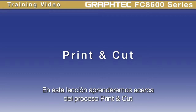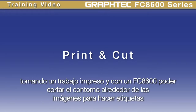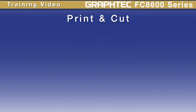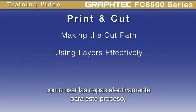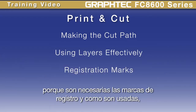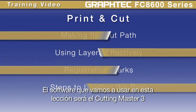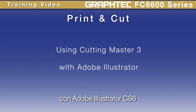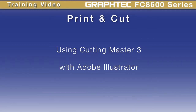In this lesson, we'll learn about the print and cut process — taking a print off your printer and having the FC8600 contour cut around the images on the print for making decals. We'll cover how to make a contour cut path, how to use layers effectively, registration marks and how they are used, and the steps required to load the print onto the cutter. The software we're using is Cutting Master 3 with Adobe Illustrator CS6, though the process is similar in other software.